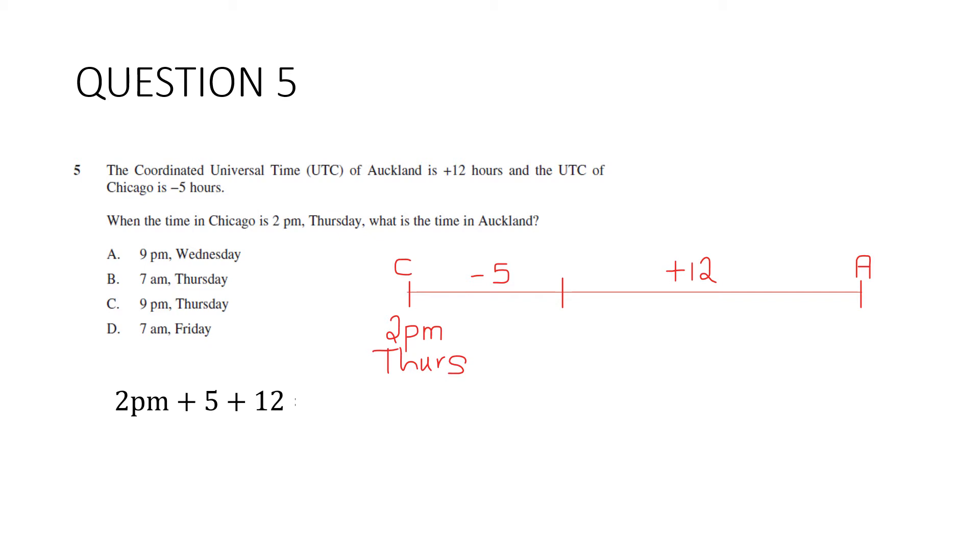There's lots of different ways to do this. You can use your calculator. Use your fingers. It doesn't really matter. Here's one way of doing it. Instead of the 5 and the 12 here, I know that I need 10 hours to get to midnight. So I'm going to change this into 10 plus 7. See, it's still the same. 5 plus 12 is 17. 10 plus 7 is 17. But this is midnight here. And that tells me it's going to be 7am the next day. So our answer is D. 7am Friday.